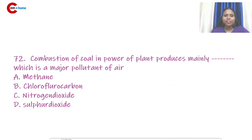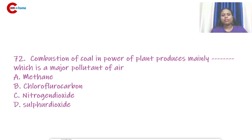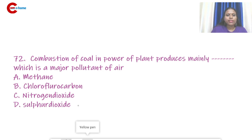Question number 72: Combustion of coal in a power plant produces mainly a dash, which is a major pollutant of air. The answer is sulfur dioxide.